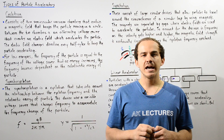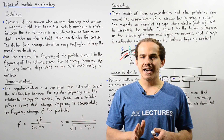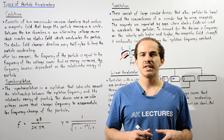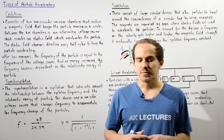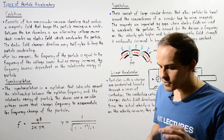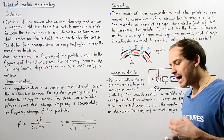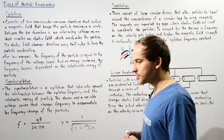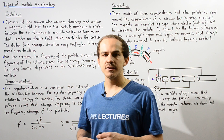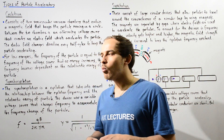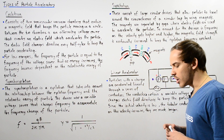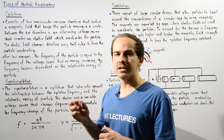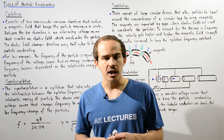There are many different types of high-energy particle accelerators that exist. One of the earliest high-energy particle accelerators that was developed was known as the cyclotron, which we already spoke about in great detail.